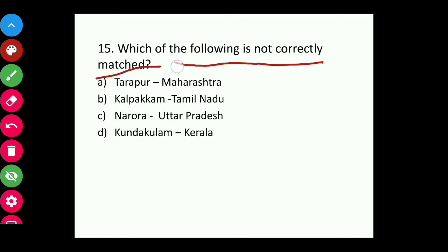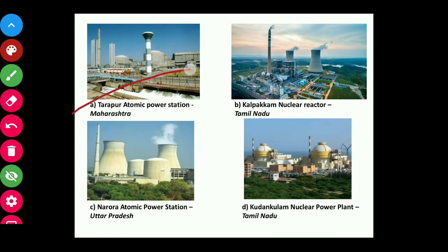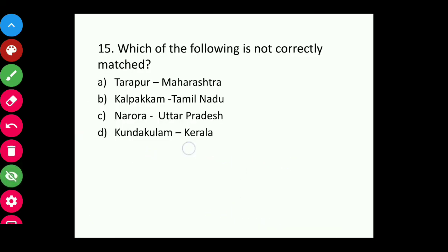Question fifteen: Which of the following is not correctly matched — Tarapur-Maharashtra, Kalpakkam-Tamil Nadu, Narora-Uttar Pradesh, or Kudankulam-Kerala? The answer is D, Kudankulam-Kerala. Tarapur Atomic Power Station in Maharashtra is correct, Kalpakkam Nuclear Reactor in Tamil Nadu is correct, Narora Atomic Power Station in Uttar Pradesh is correct. But Kudankulam Nuclear Power Plant is in Tamil Nadu, not Kerala, so that option is incorrectly matched.